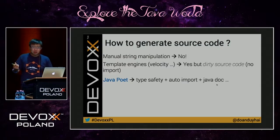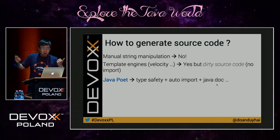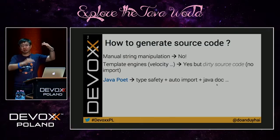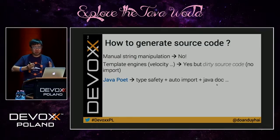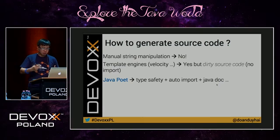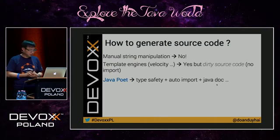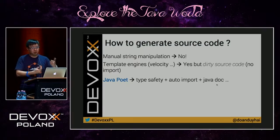How do you generate source code? There are many solutions. First, manual string manipulation — of course, no, nobody wants to do that. A lot of people use template engines like Velocity, where you create a template class and then at runtime inject the parameters. The problem with this is your source code is very dirty because there are no imports — every class has a fully qualified class name, so it's not very beautiful. Recently, there is a new project called JavaPoet, a library from Square. It provides a way to generate source code in a type-safe manner with auto-import and Javadoc.